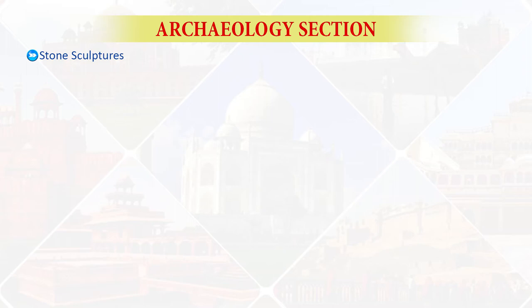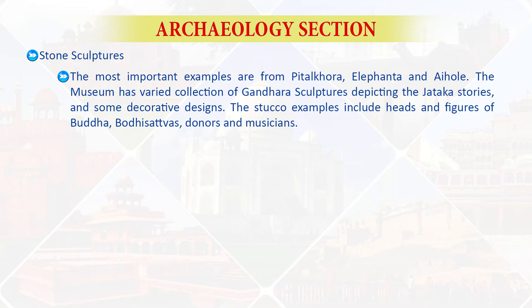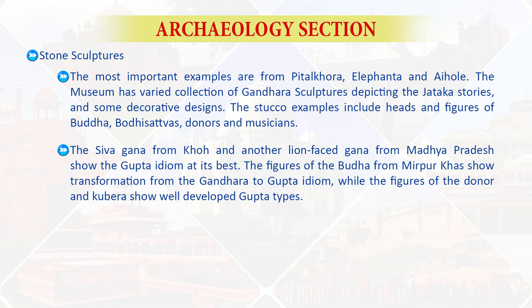Now let's study stone sculptures. The most important examples are from Pitalkhora, Elephanta, and Aihole. The museum has a varied collection of Gandhara sculptures depicting the Jataka stories and decorative designs. The stucco examples include heads and figures of Buddha, Bodhisattvas, donors, and musicians. The Shiva gana from Koh and another lion-faced gana from Madhya Pradesh show the Gupta idiom at its best.